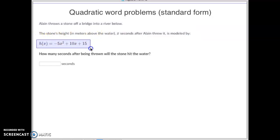What they give you is a quadratic equation in standard form, and they ask you a question. You have to just think through this. How many seconds after being thrown will the stone hit the water? Well, if you think about water, water is generally at an elevation of zero. So if it's at an elevation of zero, they're looking for an x-intercept. Basically what they're asking us to do is find out what are the two x-intercepts for this, so we can find out when that stone hit the water.